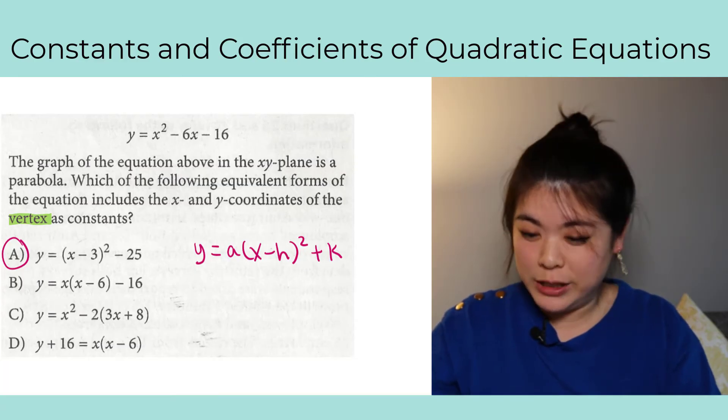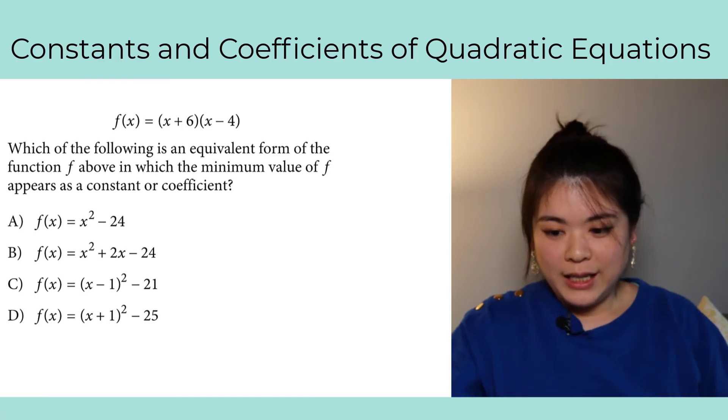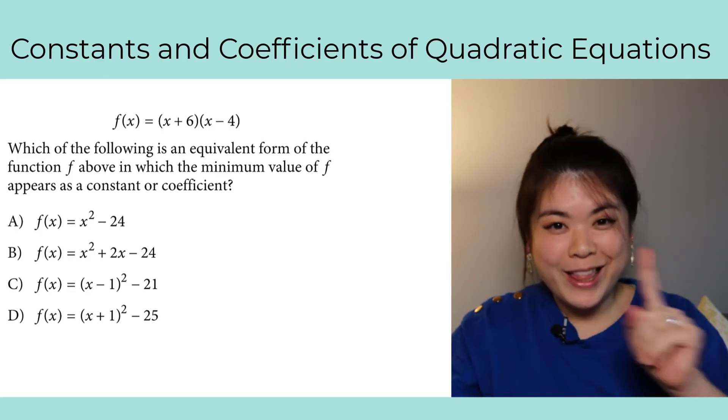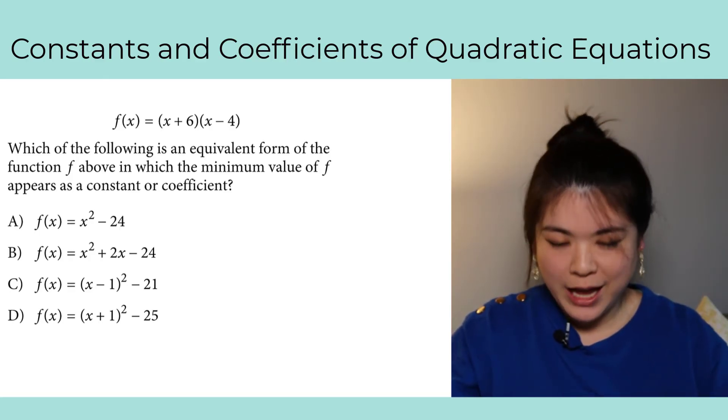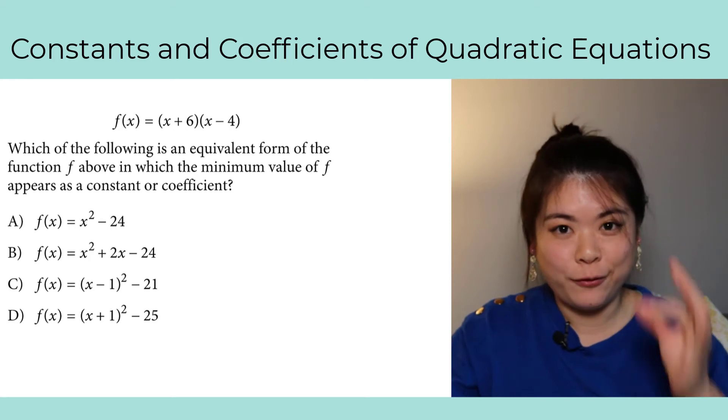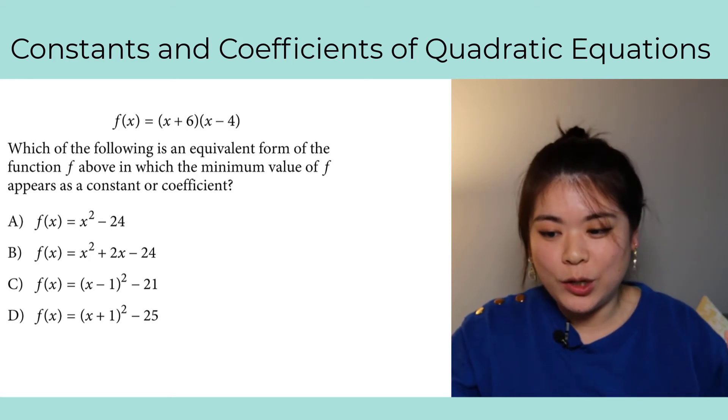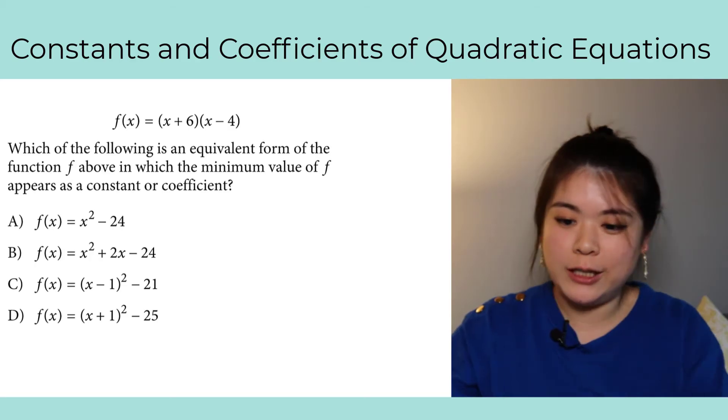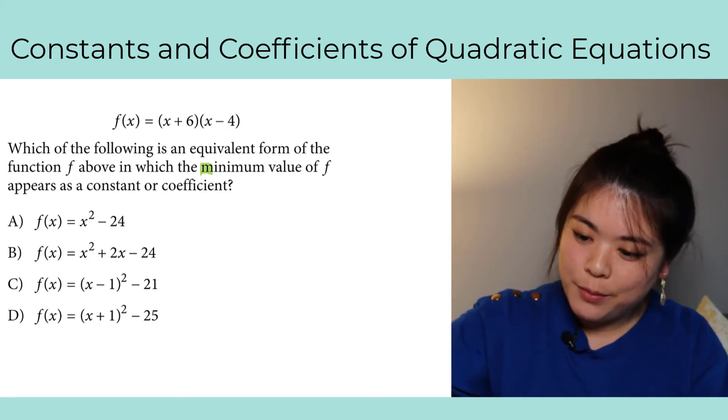I have almost no work on these questions. This is just about understanding the principle and then applying them to this question. Here's the next question: f of x equals x plus 6 times x minus 4. This is already given to you in factored form. You have to get really good at recognizing the form that you are presented. This is factored form. Which of the following is an equivalent form of the function f above in which the minimum value of f appears as a constant or coefficient? All right, let me start by highlighting the keyword, which is minimum value.